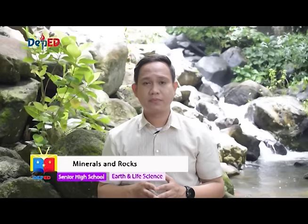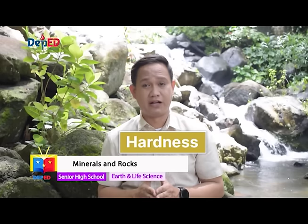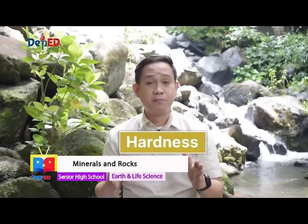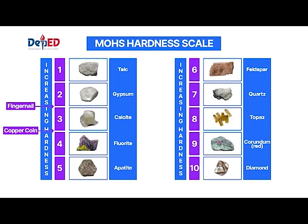Hardness is one of the better properties of minerals to use for identifying a mineral. It is a measure of a mineral's resistance to scratching. The Mohs scale is a set of ten minerals whose hardness is known. Friedrich Mohs, a German mineralogist, developed the scale in 1812. He selected ten minerals of distinctly different hardness ranging from very soft to very hard. The softest mineral, talc, has a Mohs scale rating of 1. Diamond is the hardest mineral and has a rating of 10.